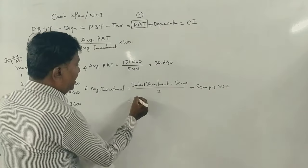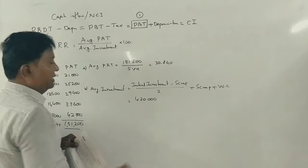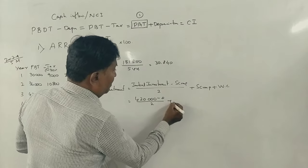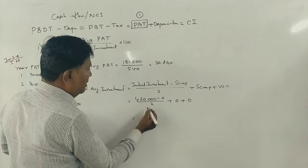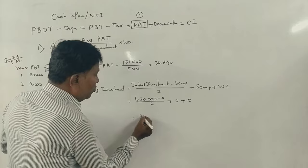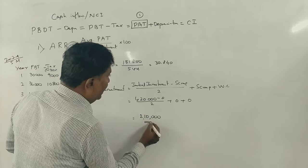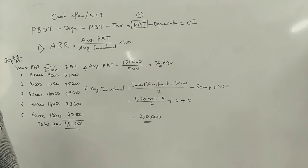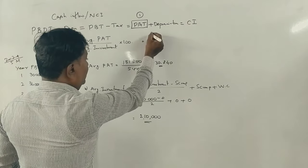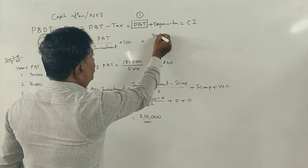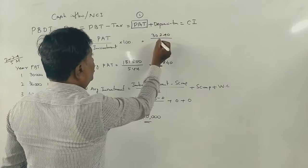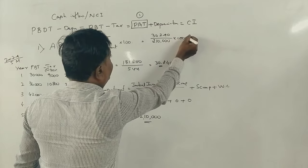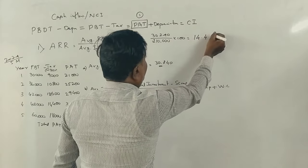Now, initial investment is 4,20,000. Scrap is nil, so average investment = (4,20,000 − 0) ÷ 2 = 2,10,000. ARR = 30,240 ÷ 2,10,000 × 100 = 14.4%.